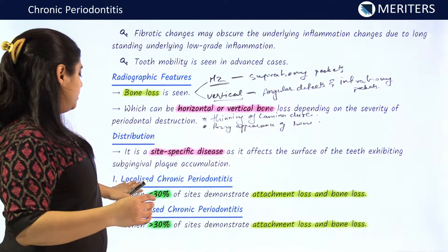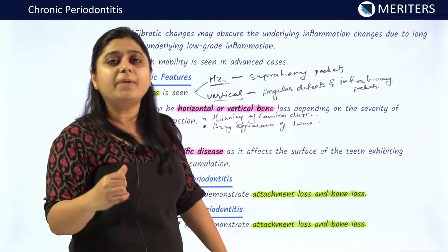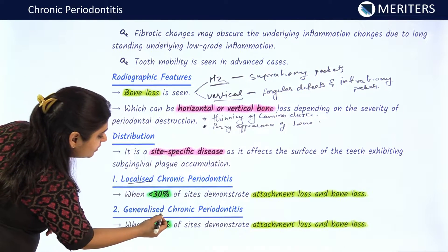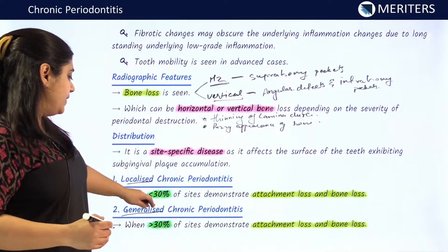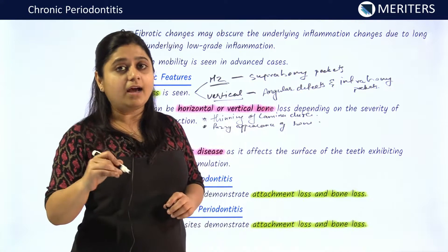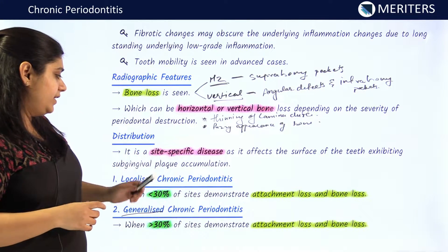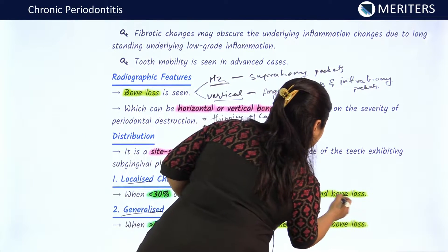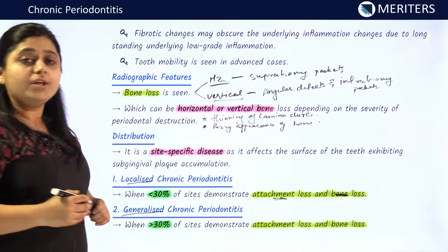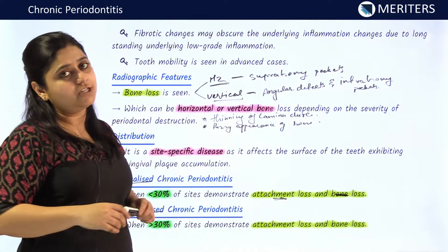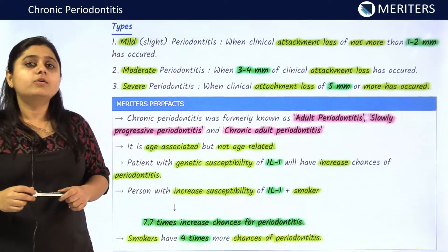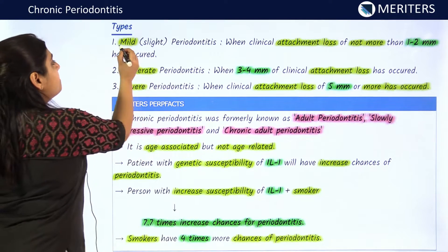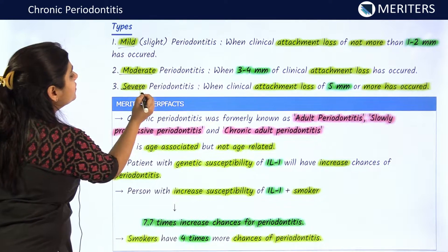Chronic periodontitis is classified as localized periodontitis and generalized periodontitis. Localized periodontitis is when less than 30% of the sites are affected — less than 30% of the sites show attachment loss and bone loss. In generalized chronic periodontitis, more than 30% of the sites show attachment and bone loss. Chronic periodontitis is also classified based on attachment loss as mild, moderate, and severe forms.